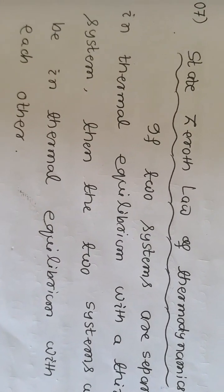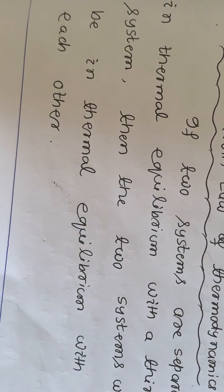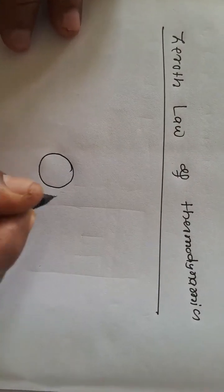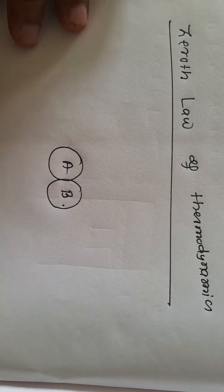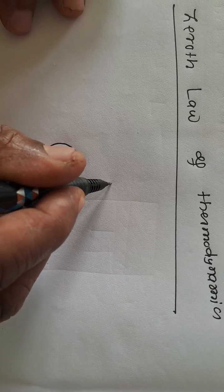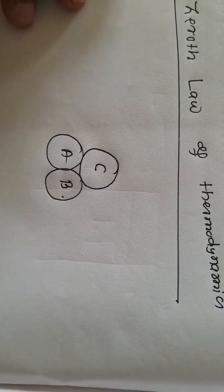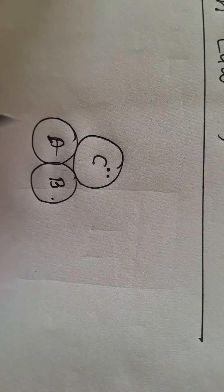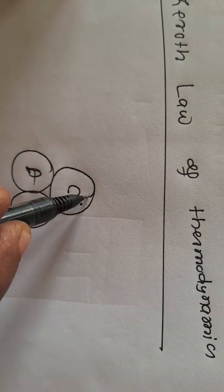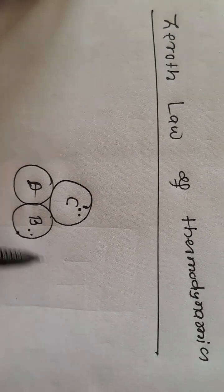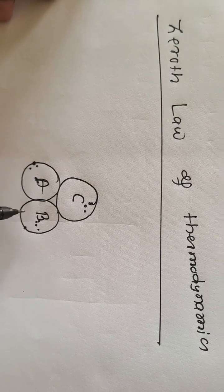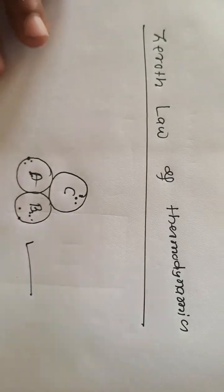Zeroth law of thermodynamics: if two systems are separately in thermal equilibrium with a third system, then the two systems will be in thermal equilibrium with each other. Consider two systems A and B which are separately in thermal equilibrium with a third system C. That means no heat flows from A to C or C to A, and similarly no heat flows from B to C or C to B. Therefore, no heat will flow from A to B or B to A, meaning A and B will have the same temperature.